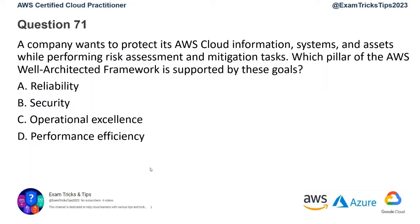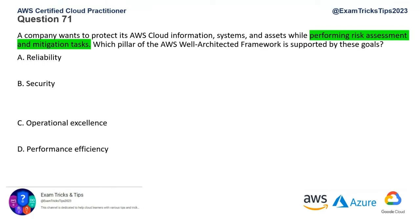Question number 71. A company wants to protect its AWS Cloud information systems and assets while performing risk assessment and mitigation tasks. Which pillar of the AWS Well-Architected Framework is supported by these goals? Please read the question, try to mark your keywords, and also try to find the answer. So here is my version of the markups - it's basically a risk assessment and mitigation task.